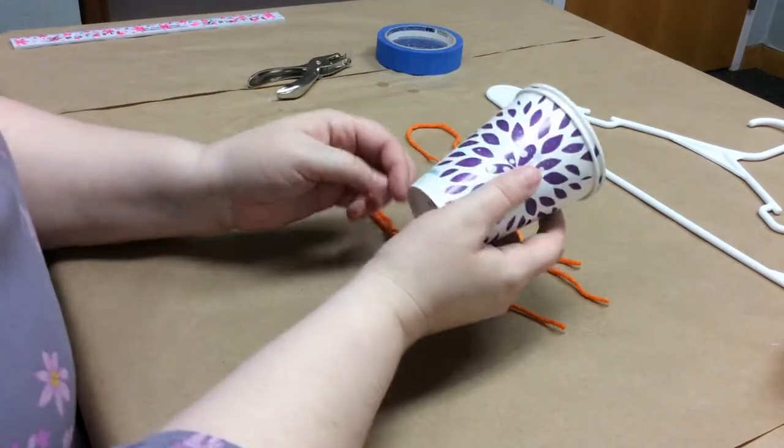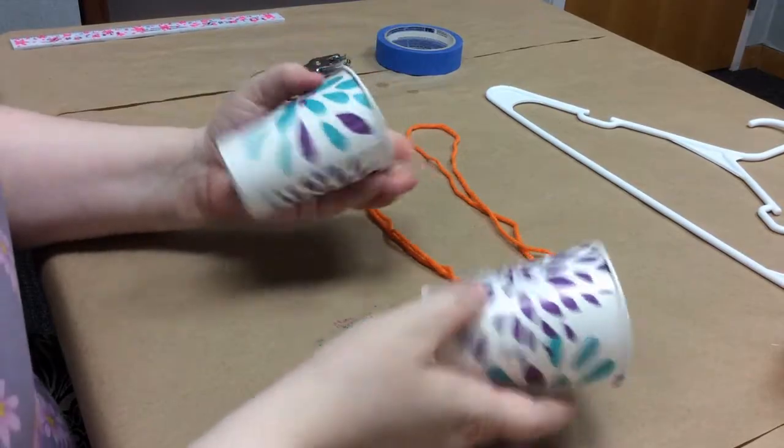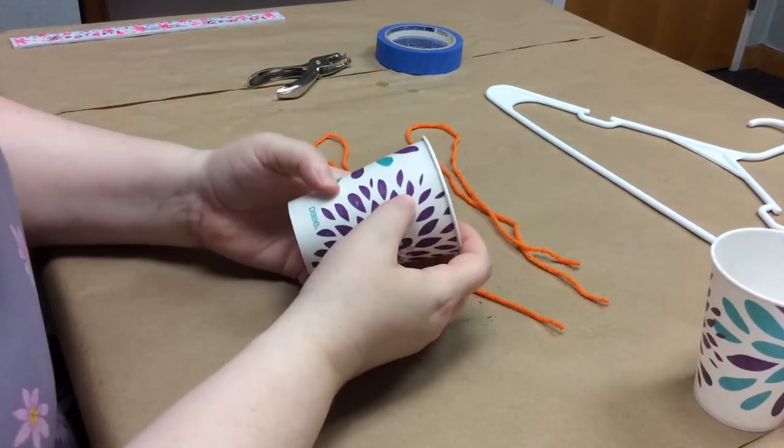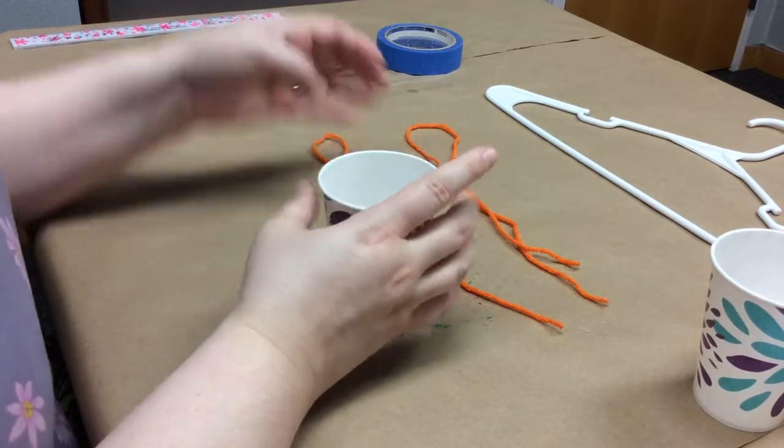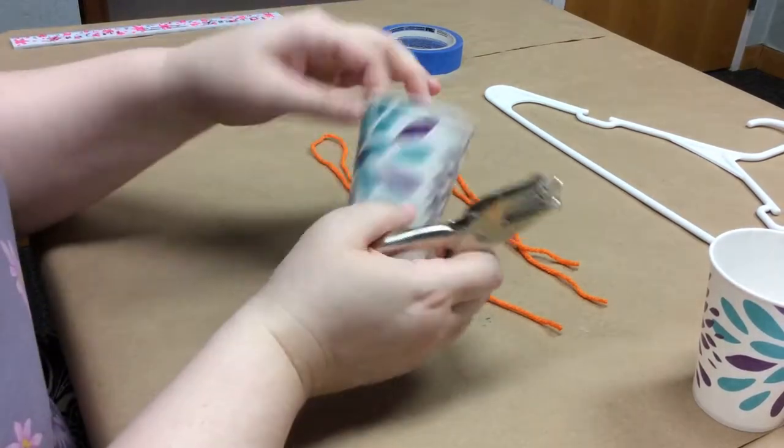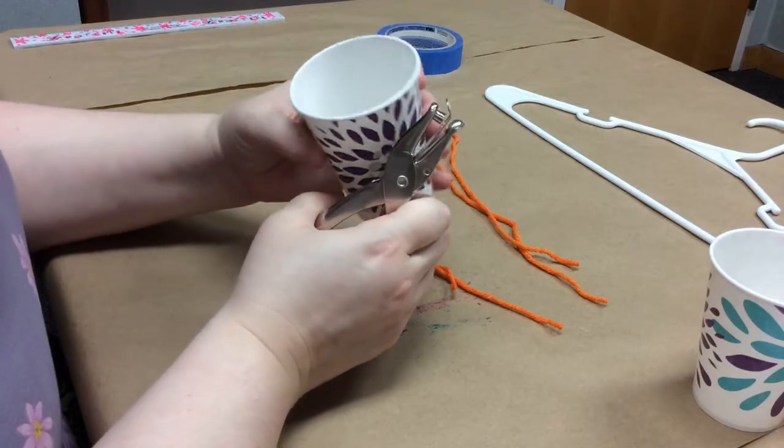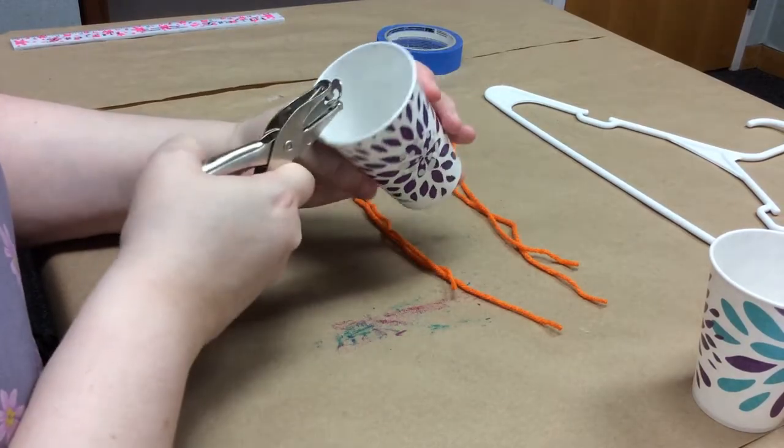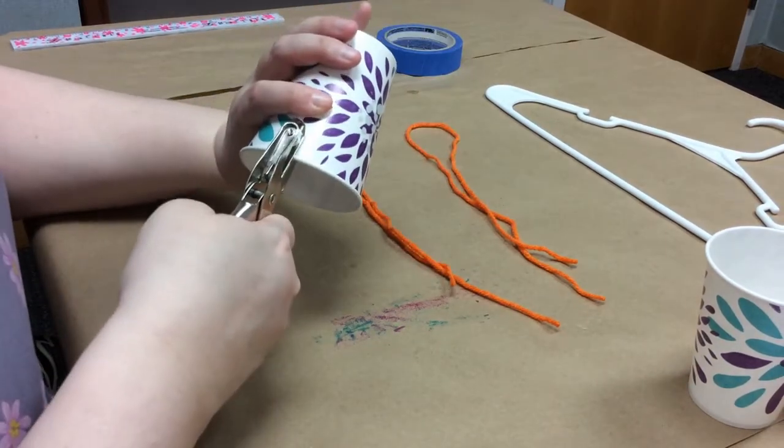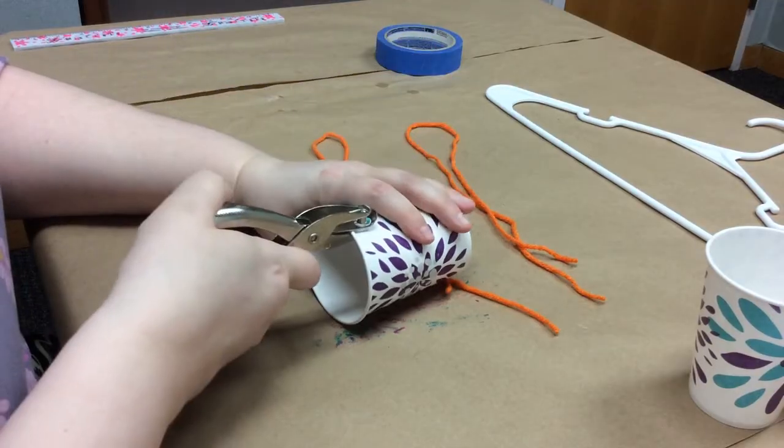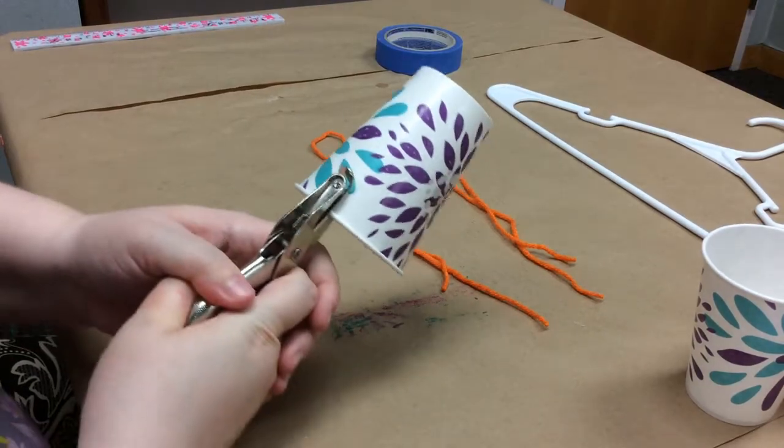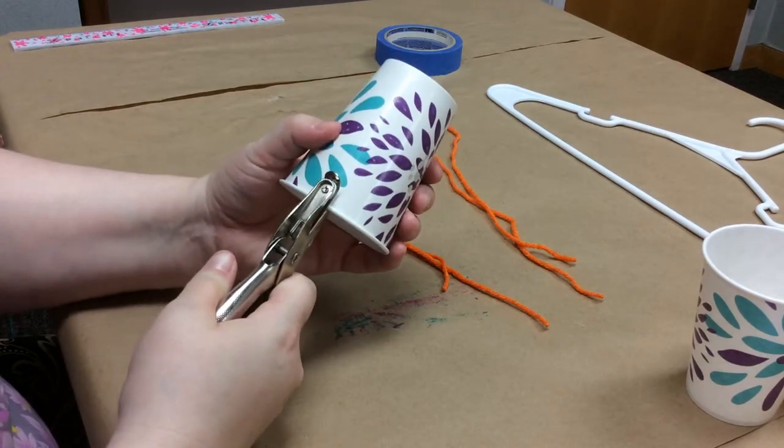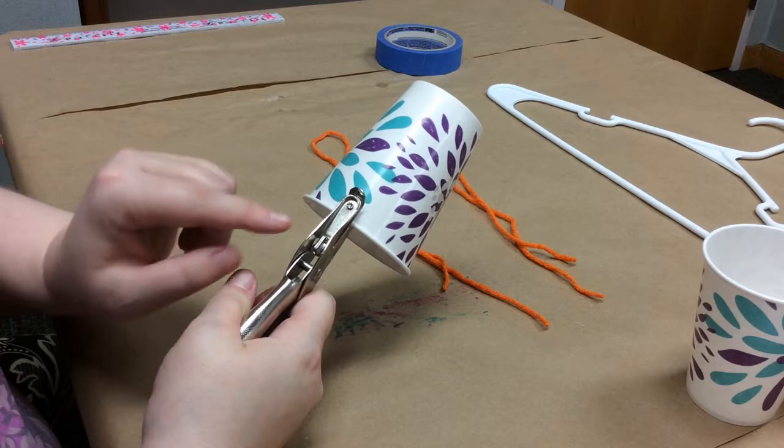And we're going to move on to our paper cups. So what you're going to want to do, I like to use this line as my guide, but you're going to want to find just any point at the top of your cup. I'm going to go directly across from this line because I'm going to use that line as my guide. And you're going to punch a hole through your cup. I'm going to do it pretty close to the lip.